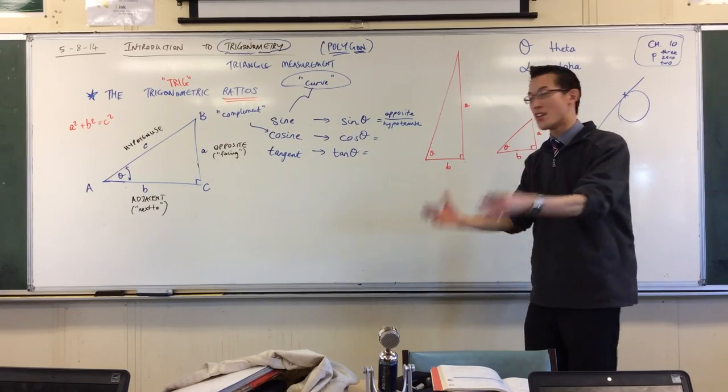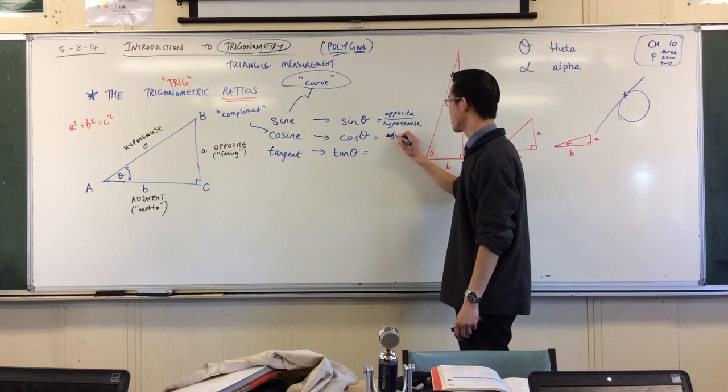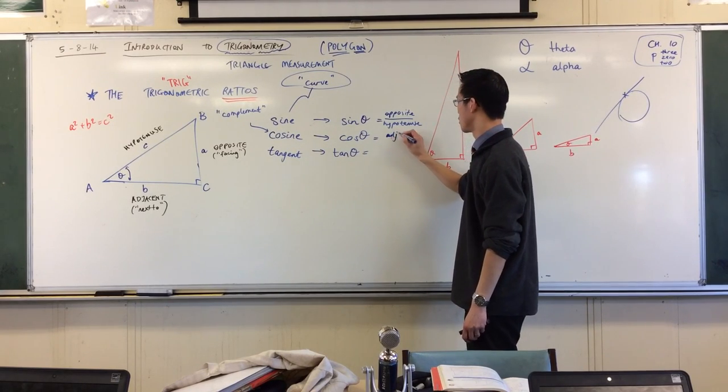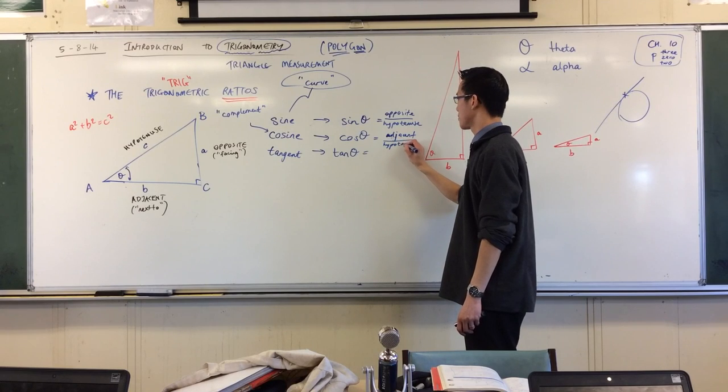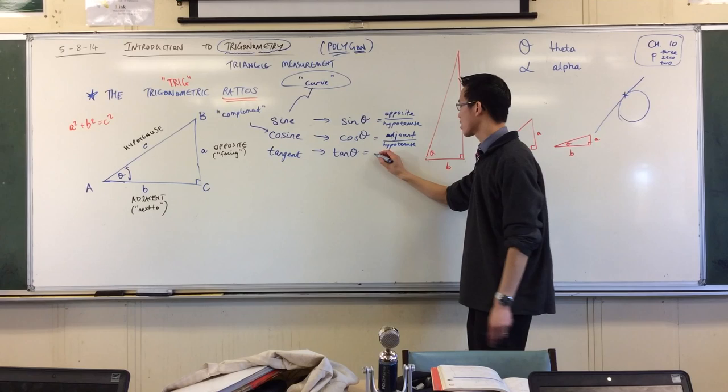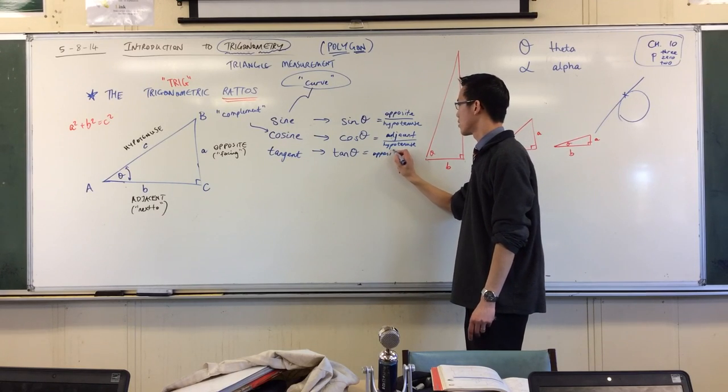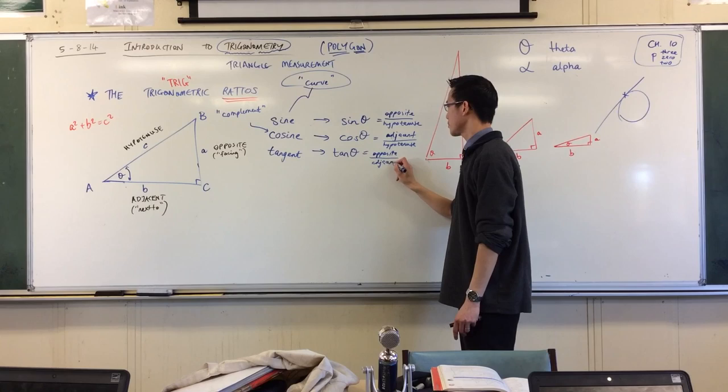Cosine is another ratio, this time instead of opposite hypotenuse it's adjacent on hypotenuse. The last one is tan which is opposite on adjacent.